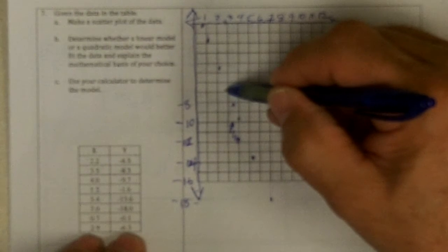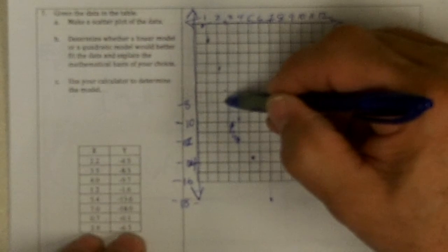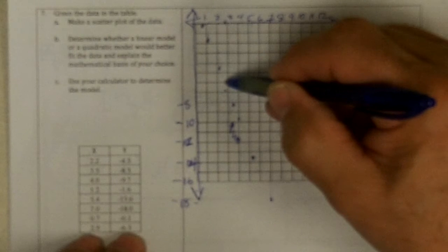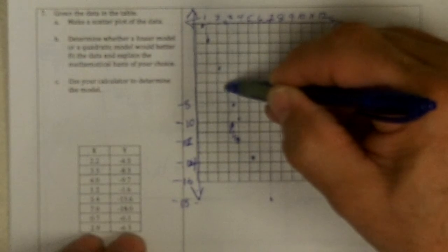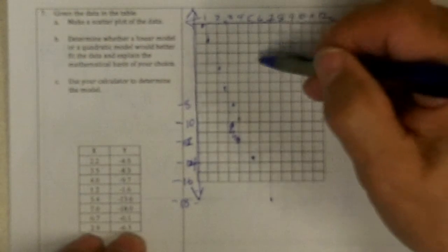I'm at negative 6.5. Negative 2.9, negative 6, negative 8, negative 7, negative 6.5. At negative 2.9, or 2.9, yeah.